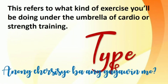The last component is type — this refers to what kind of exercise you'll be doing, under the umbrella of cardio or strength training. Cardio is any type of exercise that improves your cardiovascular system, including running, swimming, walking, dancing, aerobic routines, and cycling. Strength training, on the other hand, is any type of exercise that tones and strengthens the muscles, including the use of weights like bicep curls and bench presses, and body weight exercises such as squats, push-ups, and pull-ups.